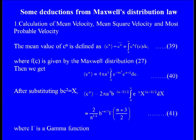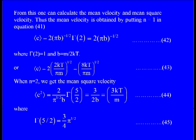This is a standard integration that can be written in terms of the gamma function, as given in any mathematical physics book. The value is (2/π)^(1/2) b^(-n/2) Γ(n+3/2). The gamma function values are tabulated in any mathematical physics book. From this one can calculate the mean velocity, mean square velocity, and other quantities.